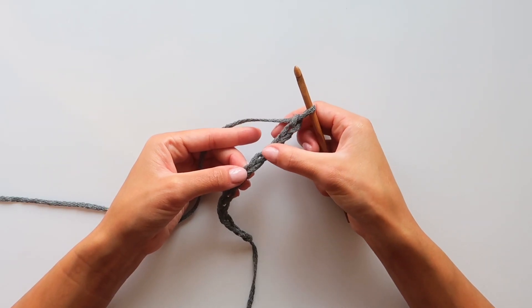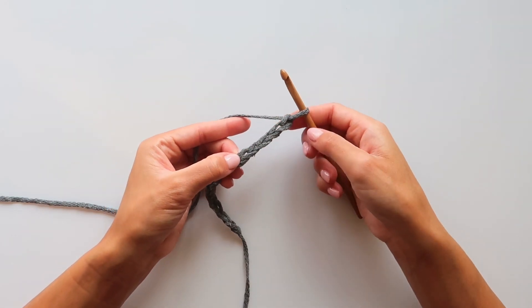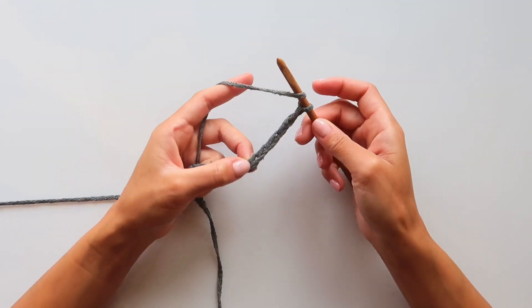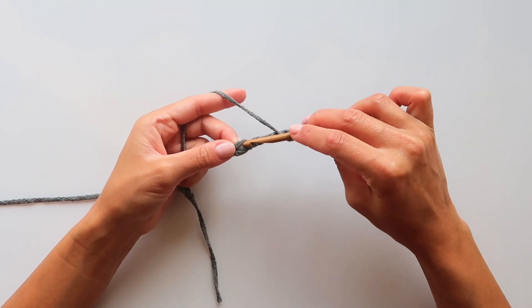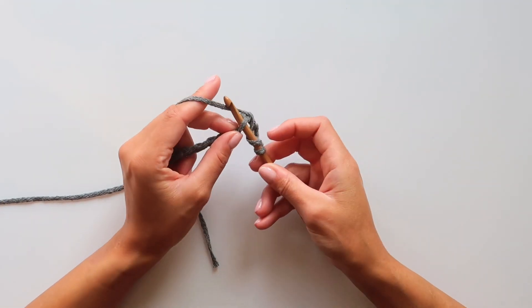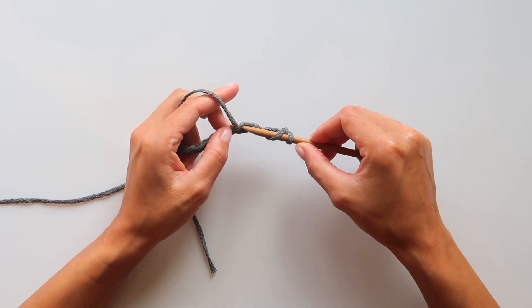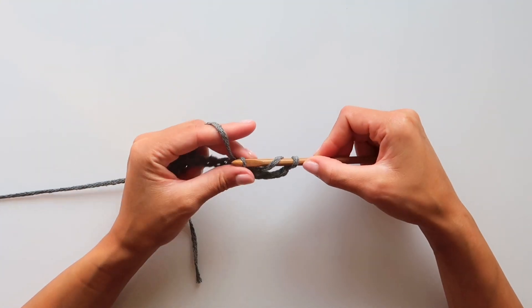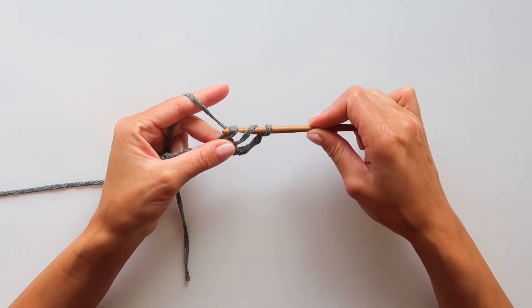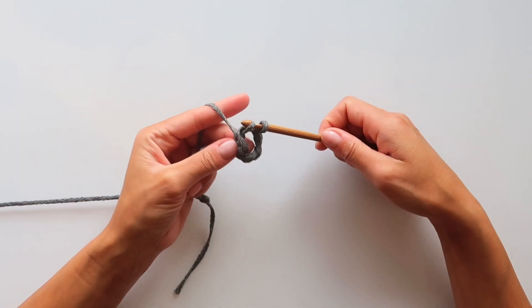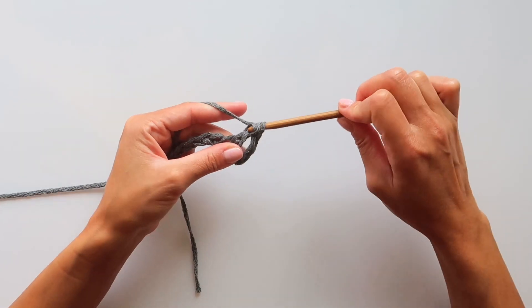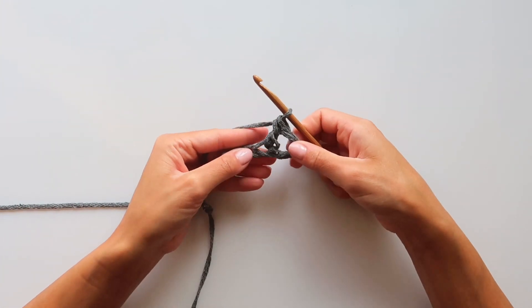I will count to five in the foundation chain and put my first double crochet. In the fifth loop of the foundation chain, I will make the first double crochet, and after every double crochet I will chain one.